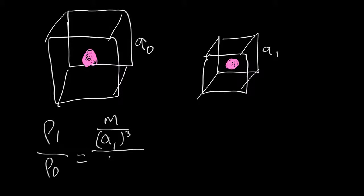Right now, well, the mass is the same in the box, so m is the same. But the volume of the box is a little different. It's a0 cubed. So that means that the density goes as a0 over a1 cubed.